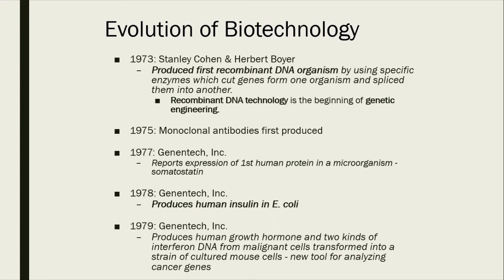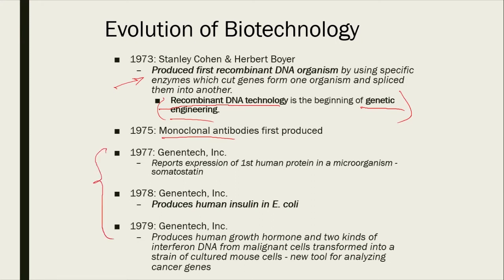In 1973, Cohen and Boyer produced the first recombinant DNA organism. That is really a breakthrough which led to recombinant DNA technology and the beginning of genetic engineering. All the biologics we've been talking about in the GEM module pretty much start from the basic concepts of recombinant DNA technology, leading to monoclonal antibody production. There was then a boom in the biotechnology industry. Genentech, one of the pioneers, produced the first human proteins in microorganisms, leading to producing insulin from E. coli.